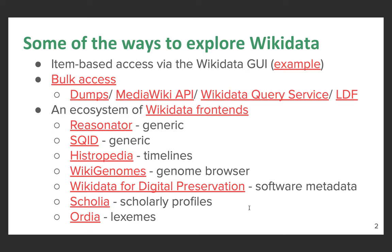This zooms in on how we can actually access the data in Wikidata. The classical Wikipedia-inspired way is to go to a single page, look at the page, and see whether the information you're looking for is there or whether anything could be improved. There are ways to automate these things — you can download the data, query the data, and edit the data in various automated fashions. Then there is an ecosystem of tools including what could be called Wikidata front-ends, which hide some of the complexity of Wikidata but surface things that are hidden in that complexity.